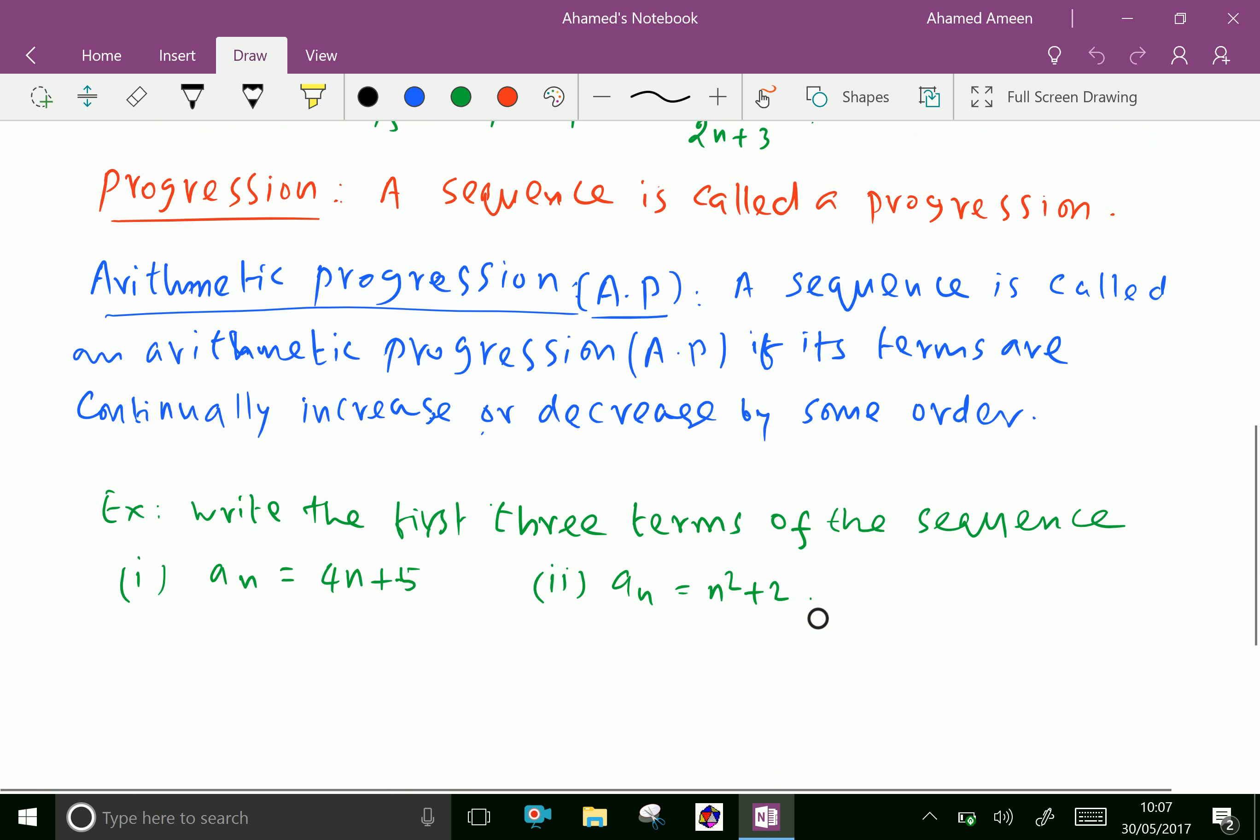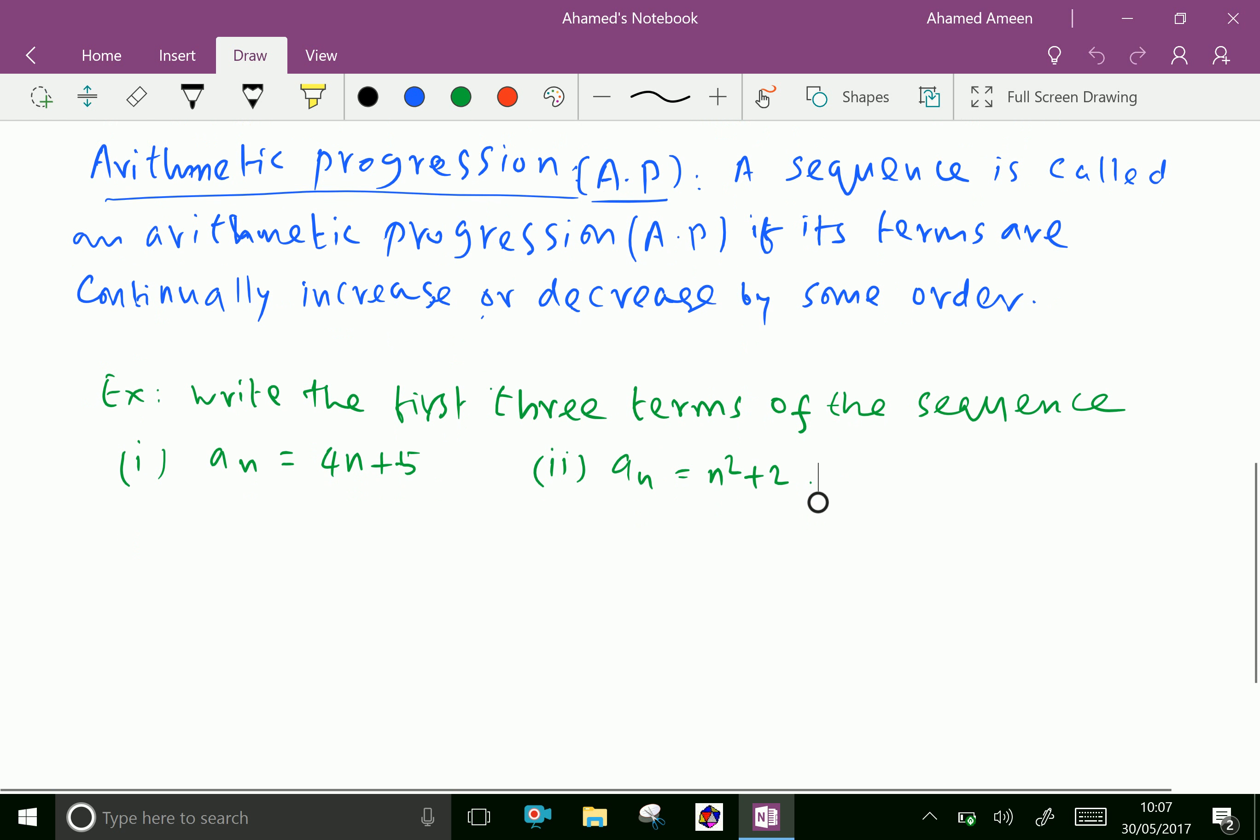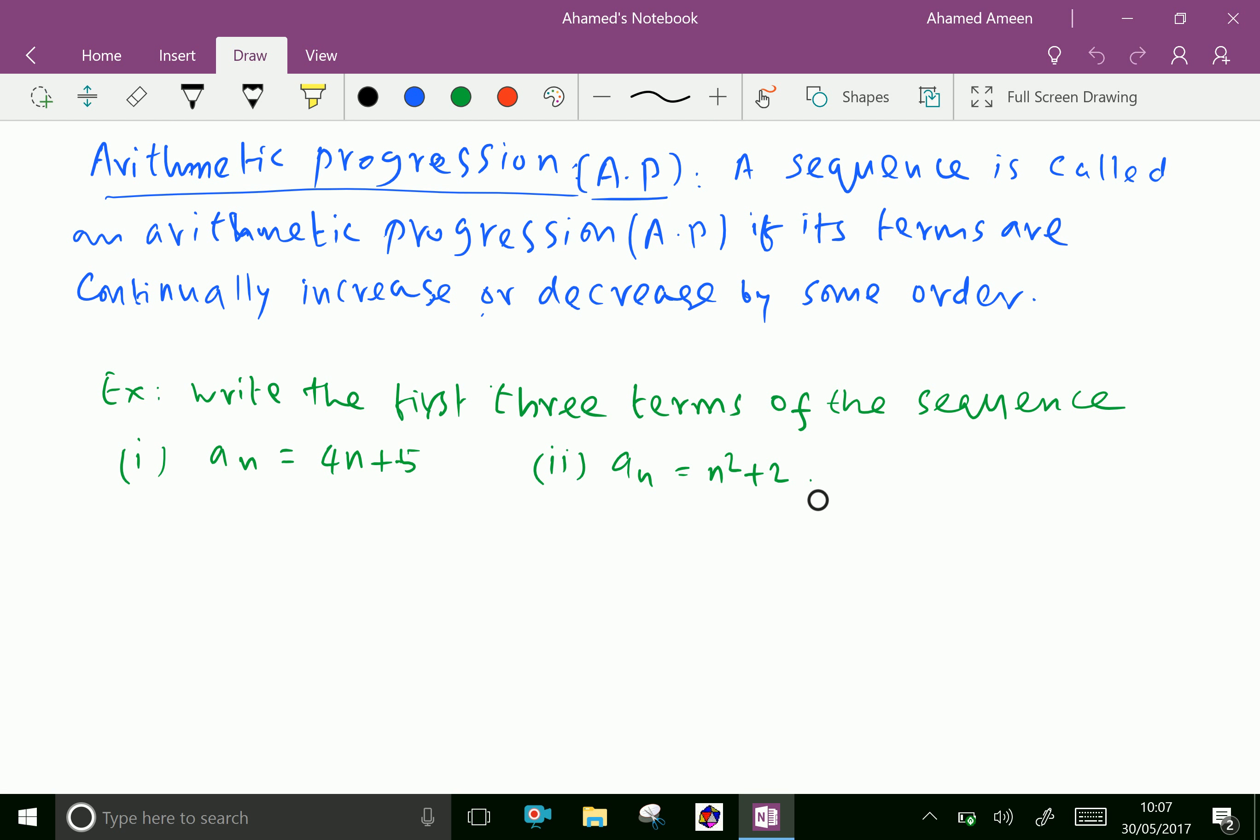Next one, a progression. A progression is a sequence. A sequence is called a progression. Arithmetic progression AP. A sequence is called an arithmetic progression AP if its terms are continually increase or decrease by some order.